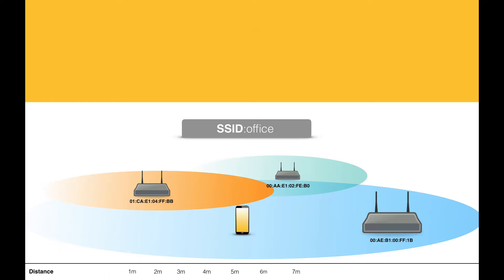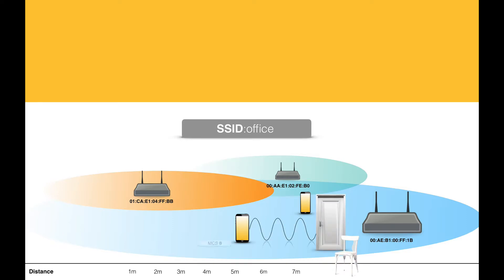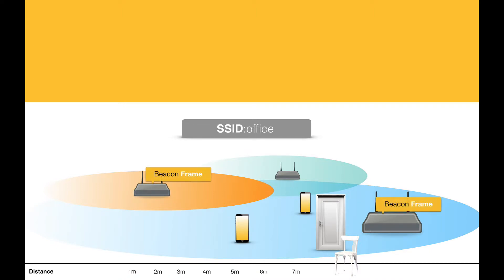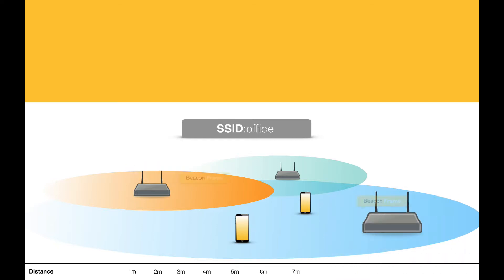Very soon you will get comfortable with the relationship between access points and stations. We will understand how an RF signal spreads in the air and attenuates, and why different data rates are chosen in different conditions. How stations share the air, how they talk without interfering with each other, how stations discover access points, and when they choose to be passive or active.